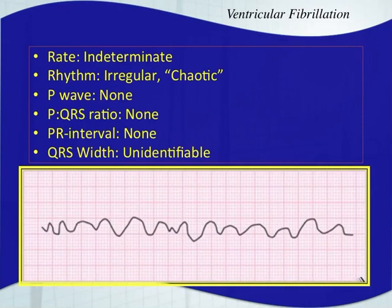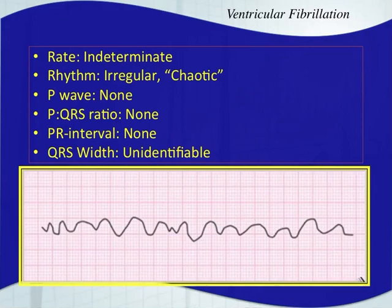Ventricular fibrillation is not sustainable with life, will not create a pulse, and is literally just the ventricles quivering — not ejecting blood in any effective manner. It's very similar to atrial fibrillation, but now the ventricles are depolarizing 600 to 800 times per minute. You're going to initiate CPR and provide defibrillation. It could look many different ways — coarse V-fib where it's easy to see the squiggly line, or fine V-fib where it's hard to see. There's no identifiable QRS complex or P wave; it just looks almost like artifact.